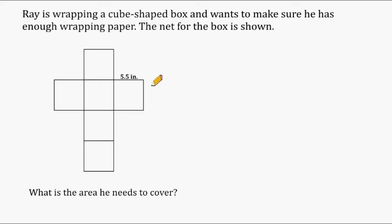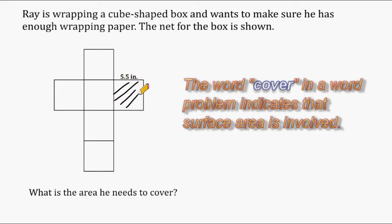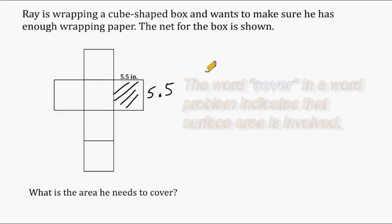We should know that a cube is comprised of six congruent squares. So let's start by finding the area of this square right here. This edge is 5.5 which means this edge is 5.5 as the length and the width of any square are equal to each other. To find the area of that square we have to multiply 5.5 by 5.5.